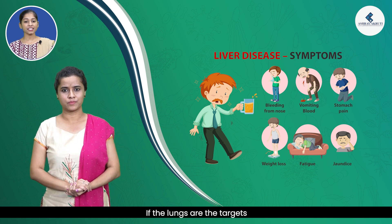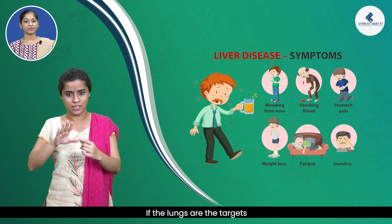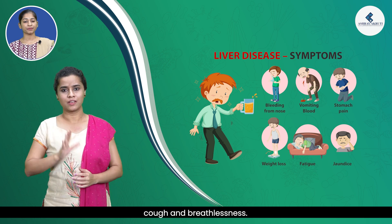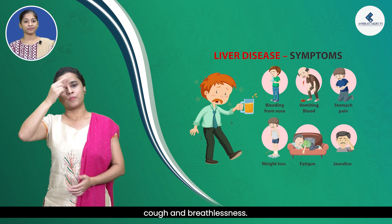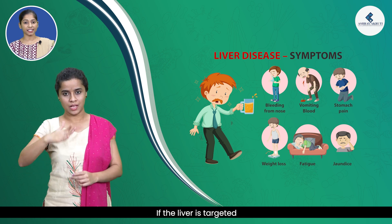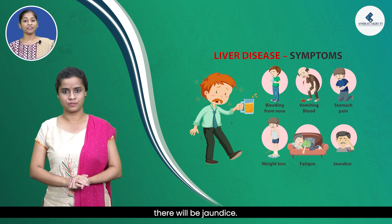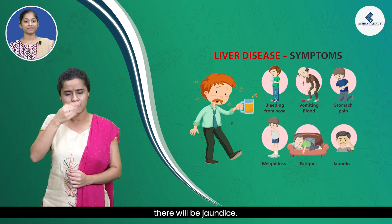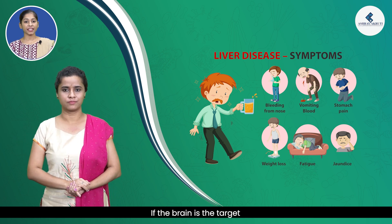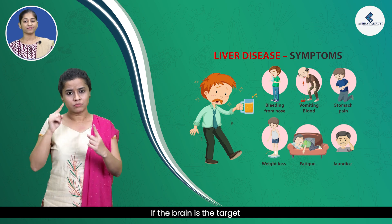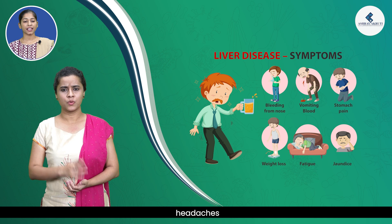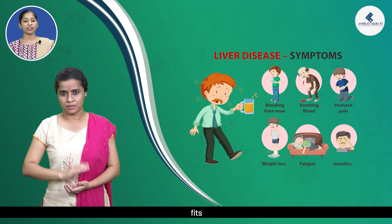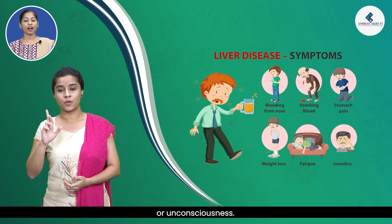If the lungs are the target, then symptoms will be cough and breathlessness. If the liver is targeted, there will be jaundice. If the brain is the target, we will observe headaches, vomiting, fits, or unconsciousness.